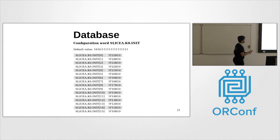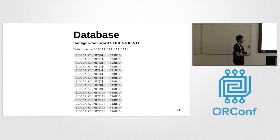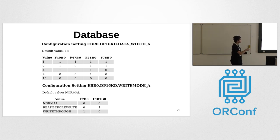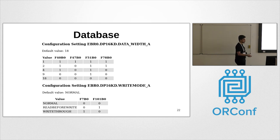For LUT initialization, you list an array of all the different bits. Notably, the LUT initialization bits are inverted, meaning the default initialization value is all ones. For enum settings — shown here for a block RAM — you list the bits set for each configuration value, such as width 1, width 2, width 4 (width 18 has none set), and for write mode, the different possible write modes and the bits to enable them.